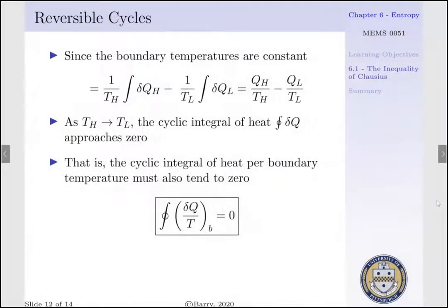Since boundary temperatures are constant, the cyclic integral equals (1/TH)·QH minus (1/TL)·QL, which is QH/TH minus QL/TL. As TH approaches TL, the cyclic integral of heat approaches zero, meaning the cyclic integral of heat per boundary temperature also tends to zero. Therefore, for reversible cycles, the cyclic integral of delta Q per T evaluated at our respective boundary conditions equals zero. This will form the foundation of our definition of entropy.